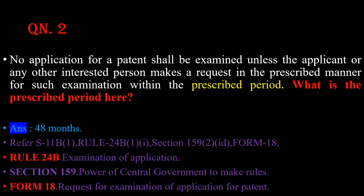Question number 2: No application for a patent shall be examined unless the applicant or any other interested person makes a request in the prescribed manner for such examination within the prescribed period. The question is: what is the prescribed period here? The answer is 48 months. Please refer section 11b subsection 1, rule 24b subrule 1 clause 1, and section 159 subsection 2 clause ID. Also, form number 18.